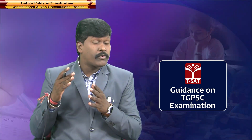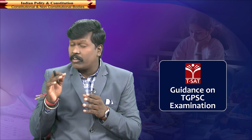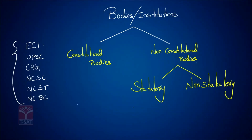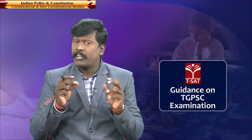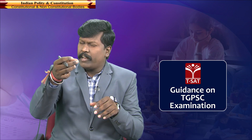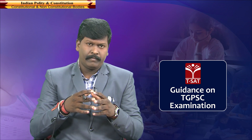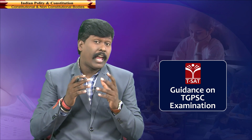Every constitutional body has an article linked to it. For example, Article 324 talks about the Election Commission of India; Article 315 deals with UPSC; Article 148 deals with CAG; Article 338, 338A, and 338B deal with SC, ST, and BC commissions respectively. Constitutional bodies derive their authority directly from the constitution — they are independent, autonomous bodies that came into force when the constitution was formed and get their power directly from it.